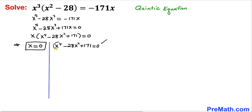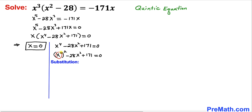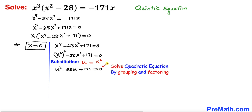Now let's focus on this equation. x⁴ can be written as (x²)², so we have (x²)² minus 28x² plus 171 equals 0. To make our job easier, let's make a substitution: let u equal x². Then our equation becomes u² minus 28u plus 171 equals 0.